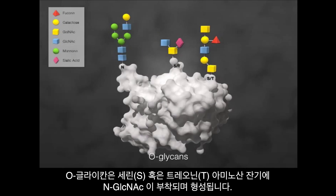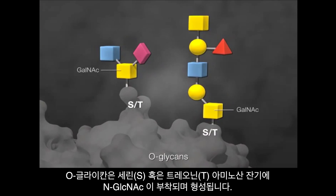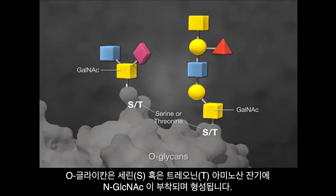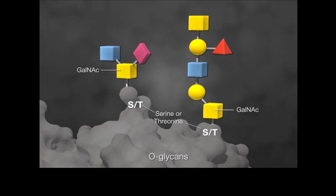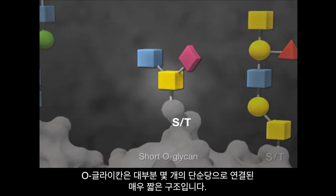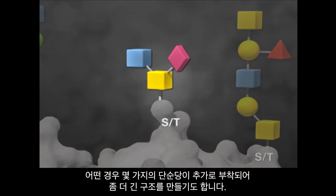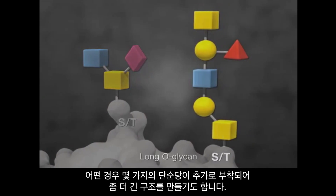O-glycans start with the addition of an N-acetylgalactosamine (GalNAc) residue to a serine, shown with an S, or threonine, shown with a T. O-glycans are often short chains consisting of only a few sugars, or they can be extended by the addition of different monosaccharides, resulting in a longer chain.